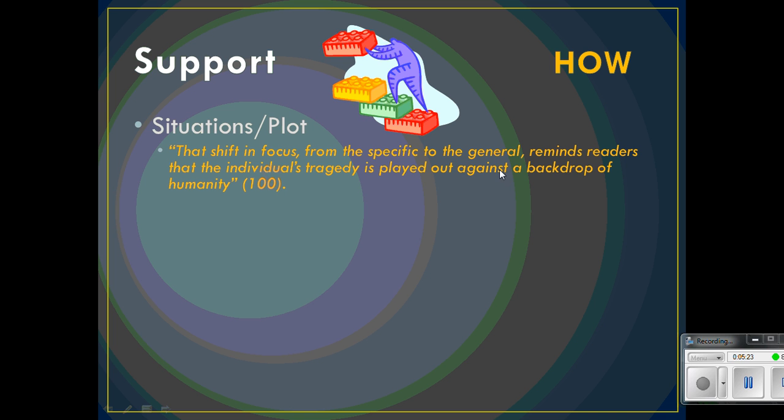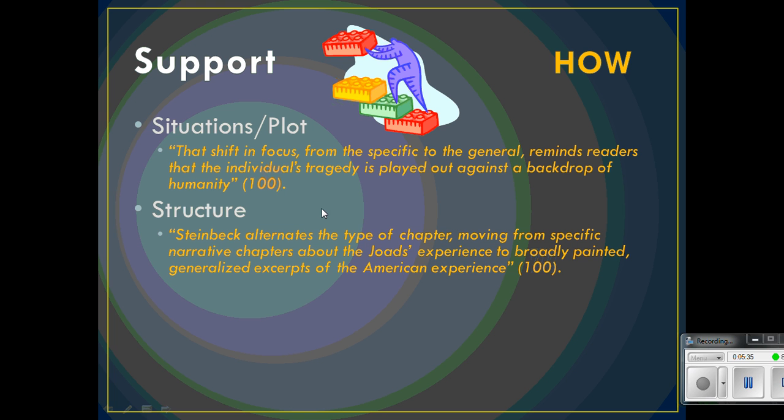Now, with regard to that, even more specifically, it has to do with structure. Steinbeck definitely has a unique structure to his novel because it is a combination of fiction and nonfiction. On page 100 again, she states Steinbeck alternates the type of chapter — she's talking about structure here — moving from specific narrative chapters about the Joads' experience to broadly painted, generalized excerpts of the American experience. I want you to notice in both of these examples that she has a tie-in to a bigger idea.